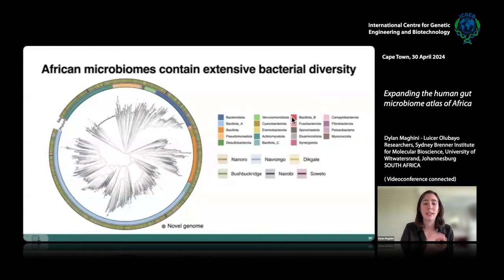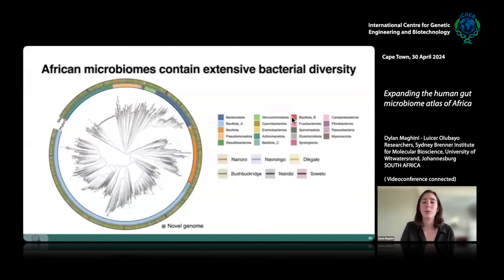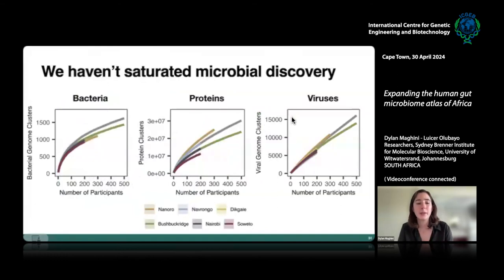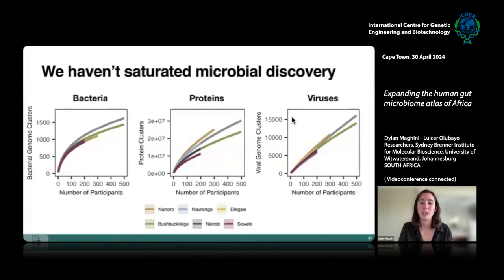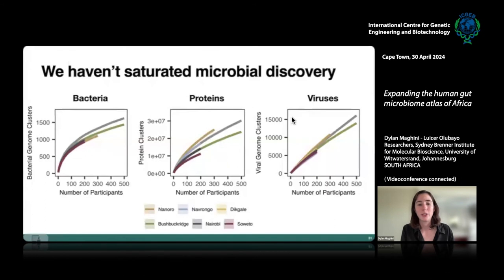As shown in a phylogeny plot of these genomes, the inner ring indicates they come from 19 different bacterial phyla — not just one underrepresented phylum, but across the bacterial tree of life. We were curious whether we had found everything there is to find, and rarefaction curves across our participant pool show we really haven't plateaued. As we look at more and more individuals, we haven't hit that asymptotic line. Especially for bacterial proteins and viruses, there's a lot more novelty still to be discovered.